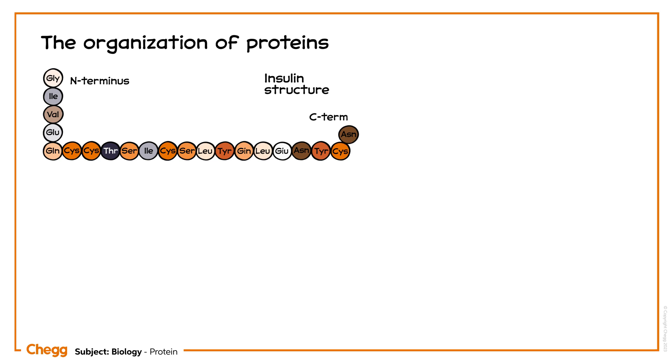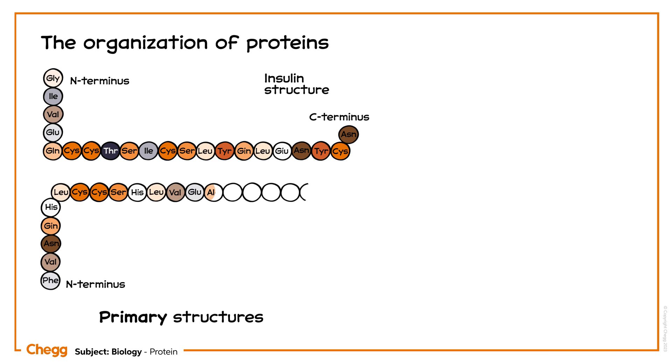The simplest level of protein is formed by a linear sequence of amino acids in a polypeptide chain called the primary structure. As in the structure of insulin, it has two long chains of a protein called the A and the B chain.